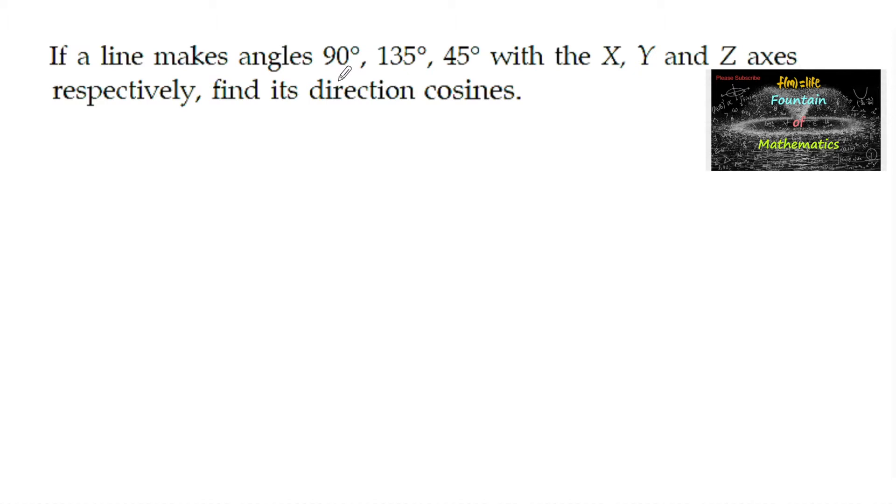So here direction angles are given 90 degrees, 135 degrees, 45 degrees. So direction cosines of a given line are L equals cos alpha, that is here 90 degrees with x-axis, M equals cos 135 degrees, and N equals cos gamma, that is 45 degrees with the z-axis angle.